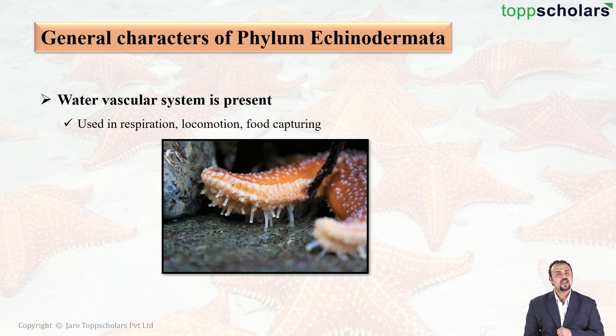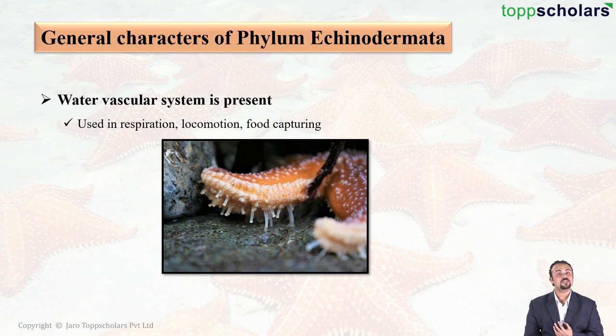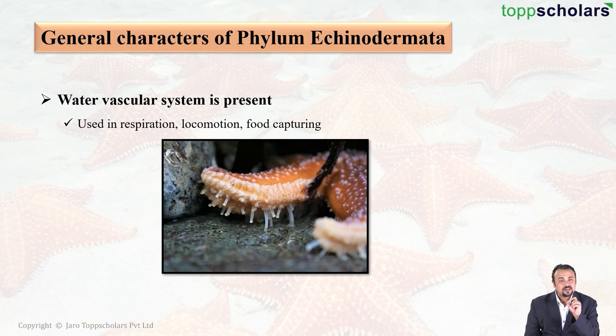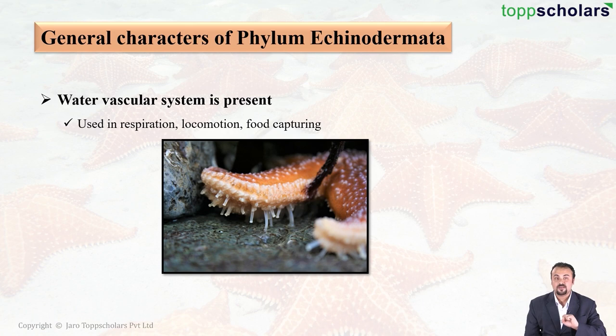On the dorsal side, right in the center of many echinoderms, lies a big opening called the madreporite. Through this opening, water is constantly sucked inside. It spreads all around their body, and those very small white-colored tube-shaped structures you see in the diagram are the tube feet. Through the tube feet this water is thrown out. As water comes in it takes in oxygen, and when it goes out it gives out carbon dioxide — so respiration is covered.